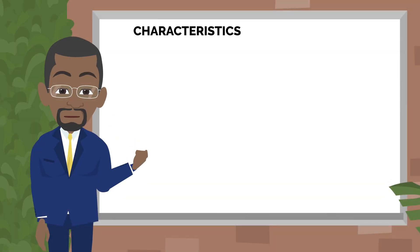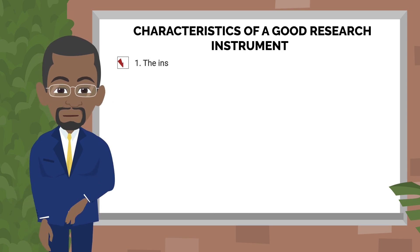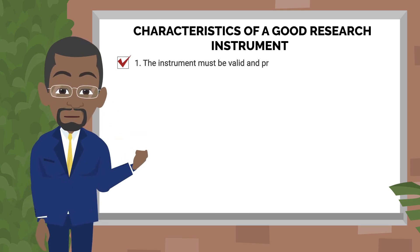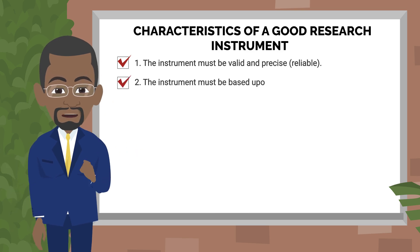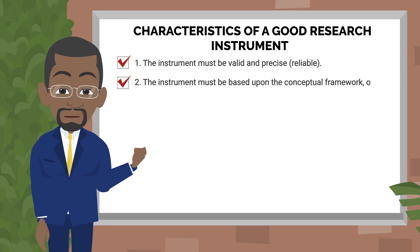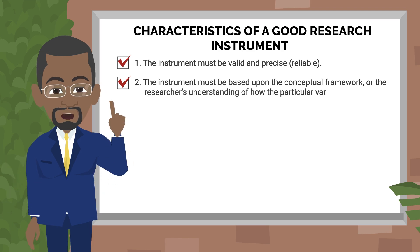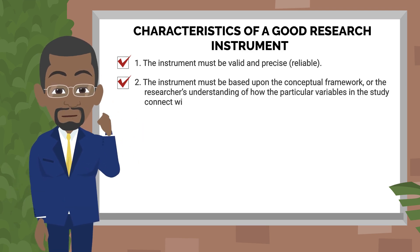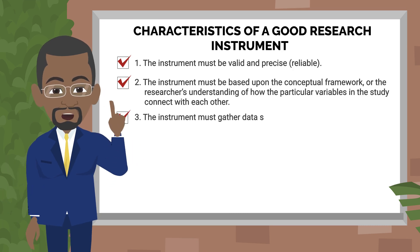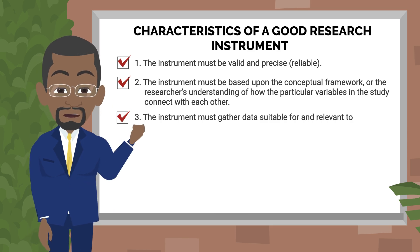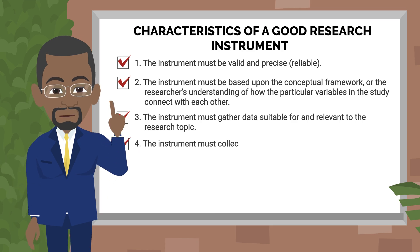Characteristics of a good research instrument: one, the instrument must be valid, precise, and reliable; two, the instrument must be based upon the conceptual framework or the researcher's understanding of how the particular variables in the study connect with each other; three, the instrument must gather data suitable for and relevant to the research topic.